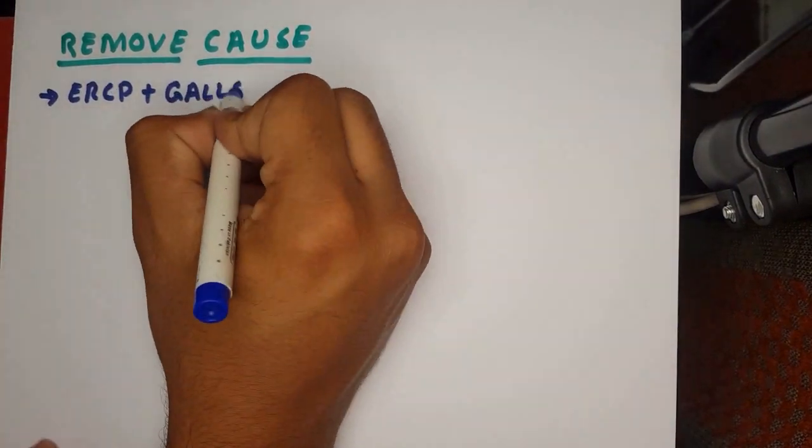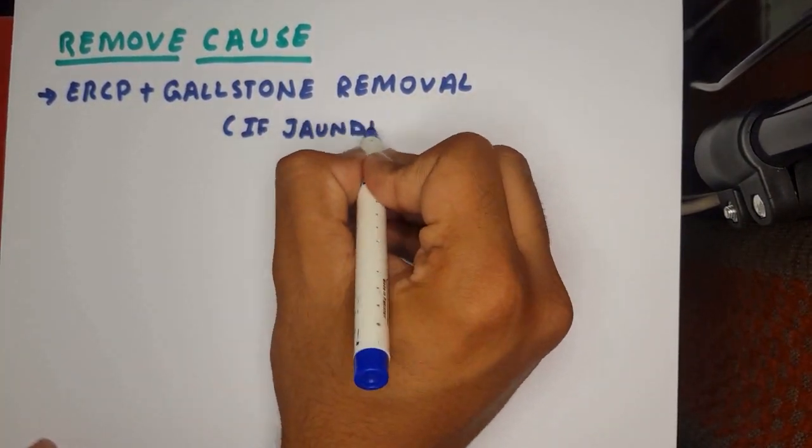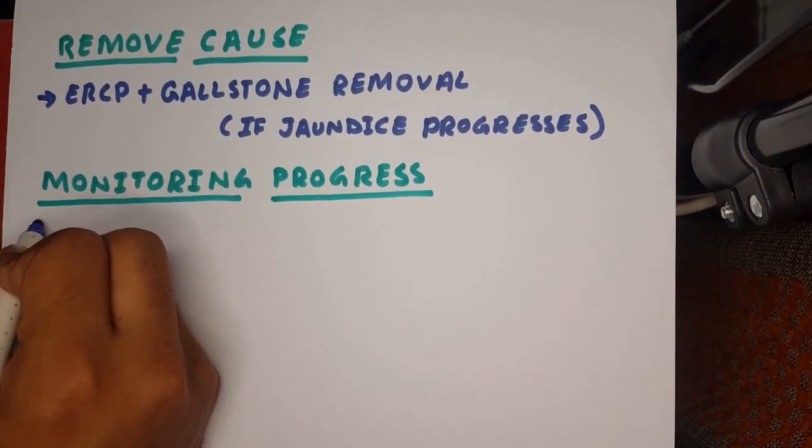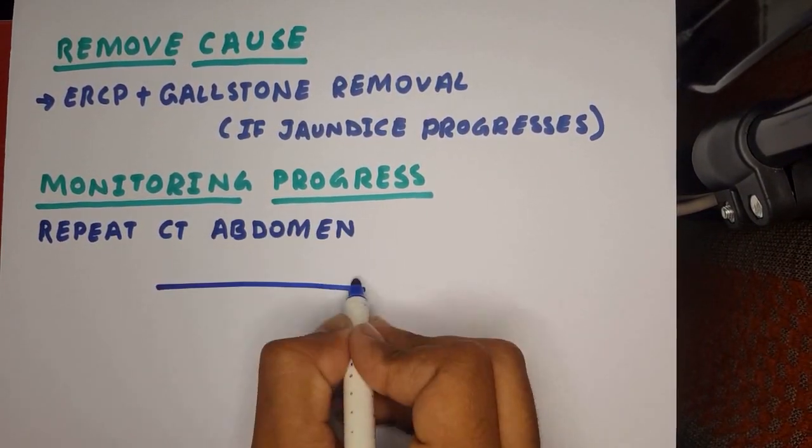If the patient has progressive jaundice, we need to do an ERCP and remove the gallstones. And when monitoring the progress, we need to repeat a CT abdomen.